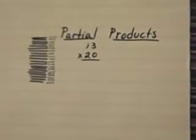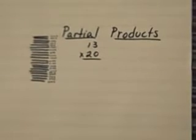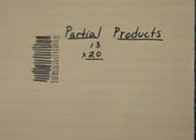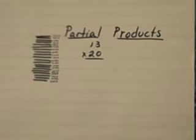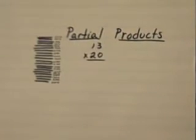Let's look at this example: 13 times 20. With partial products the students are encouraged to think of this as 20 rows of 13 as we see here with our base 10 block notation.